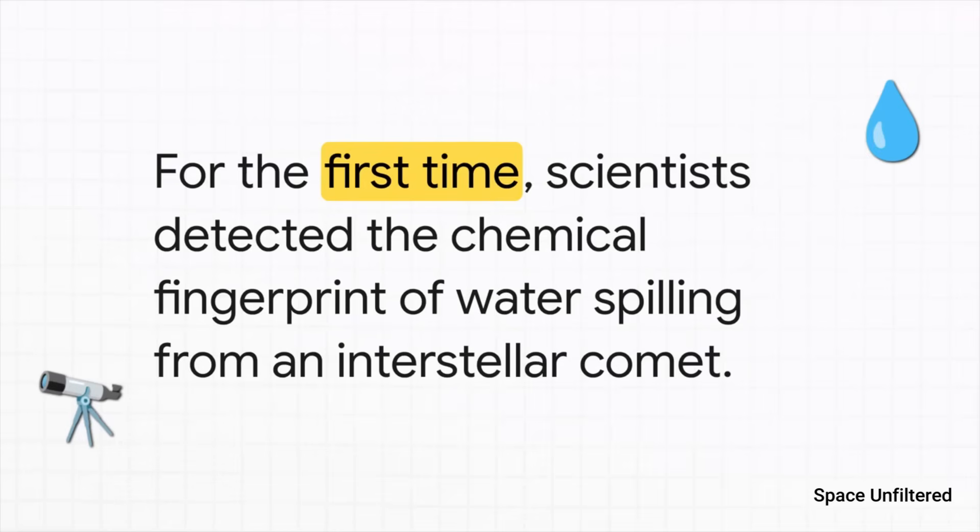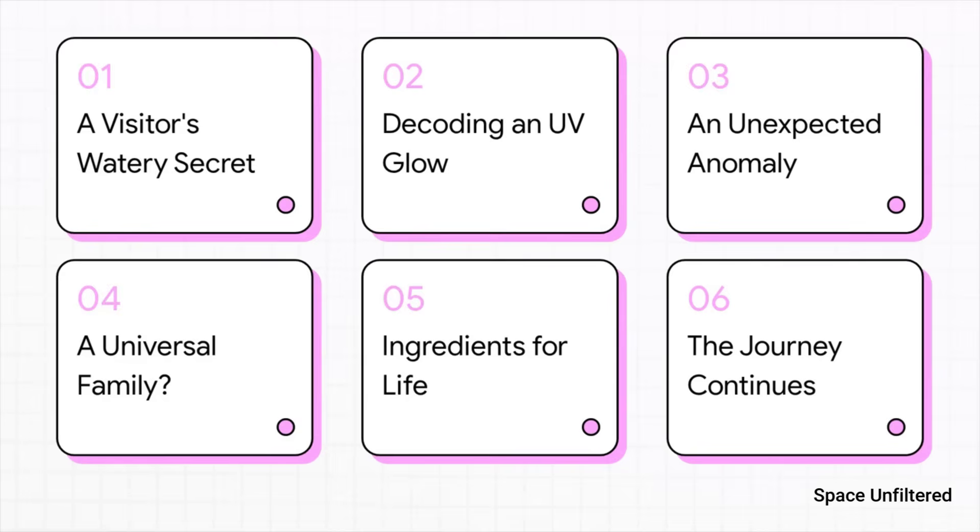You have to understand this isn't just any old observation. This is a huge deal. It marks the very first time we've ever detected the chemical fingerprint of water spilling from a comet that came from outside our own solar system. So how did scientists even find this watery secret and what does it really mean for us?